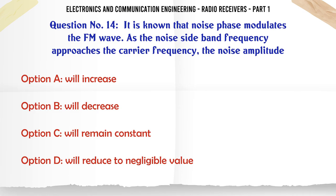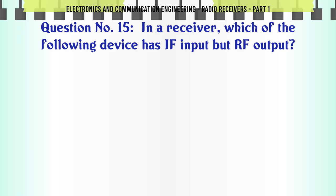It is known that noise phase modulates the FM wave. As the noise sideband frequency approaches the carrier frequency, the noise amplitude: a. Will increase. b. Will decrease. c. Will remain constant. d. Will reduce to negligible value. The correct answer is will decrease.